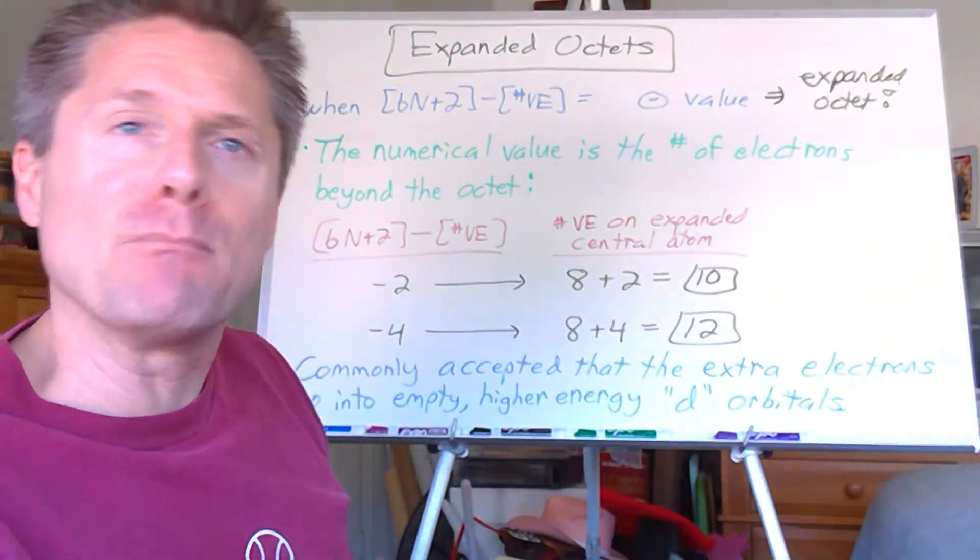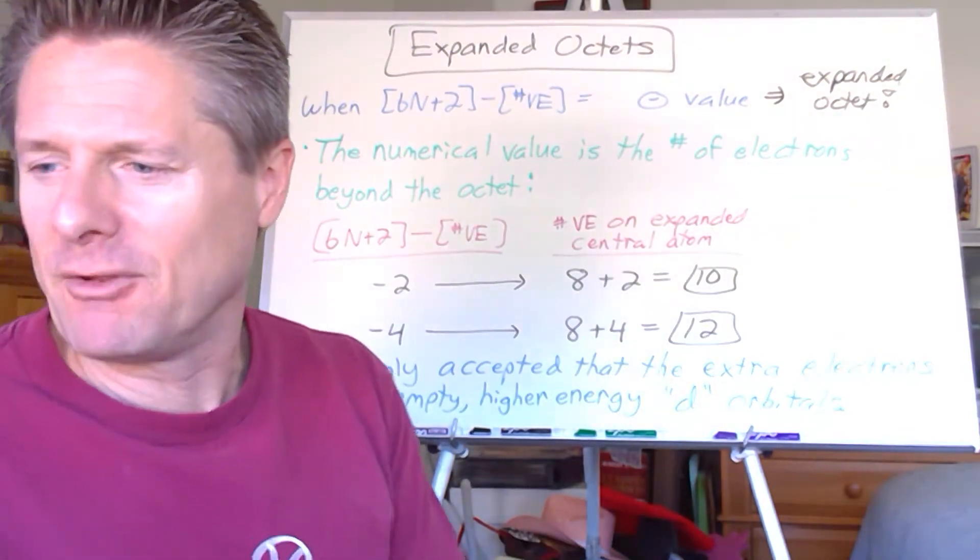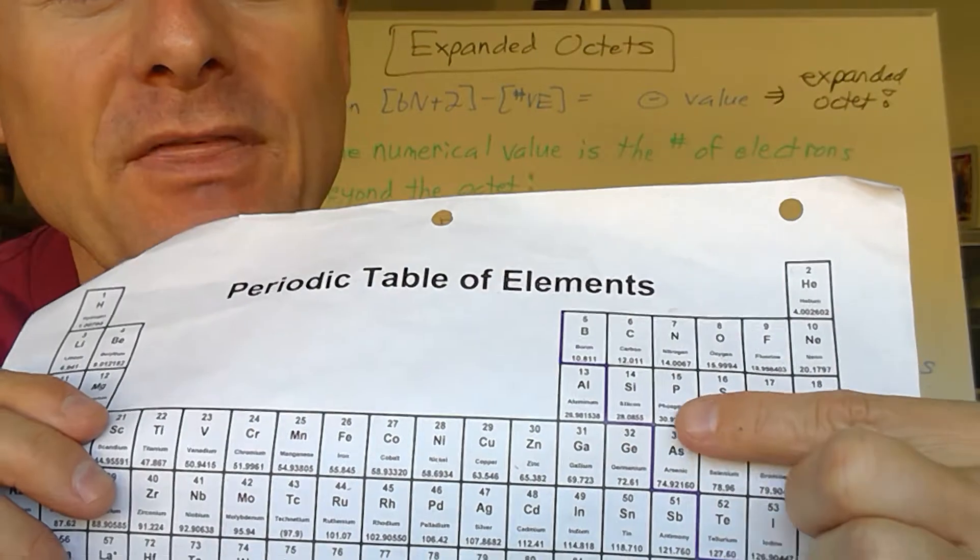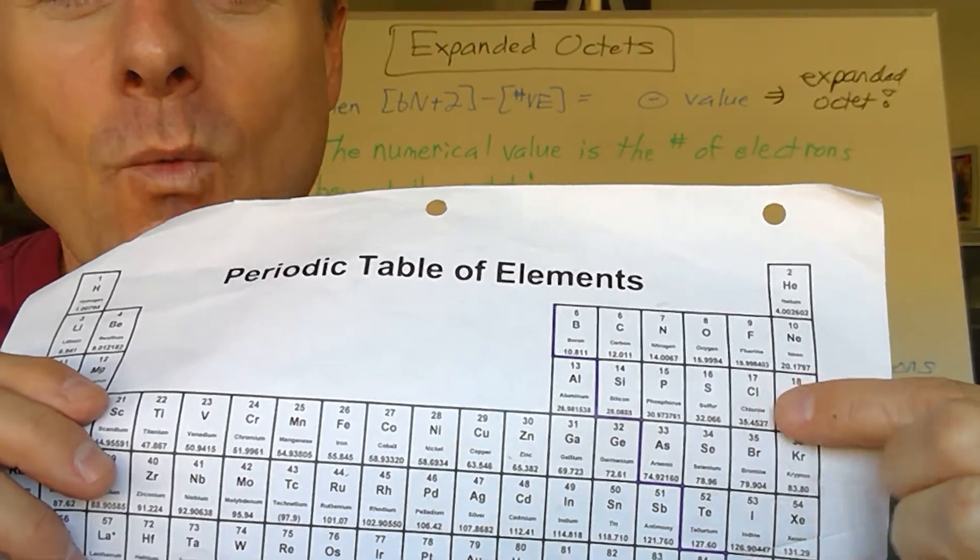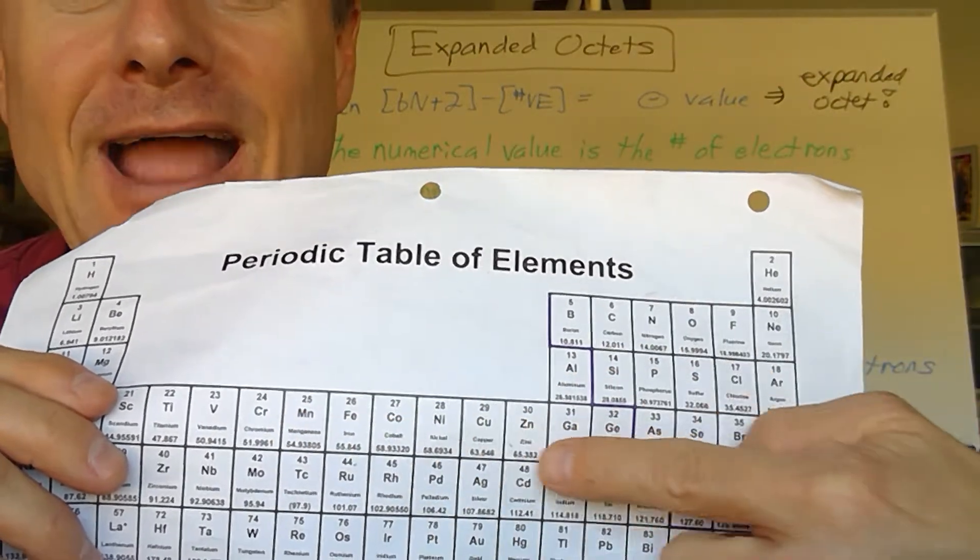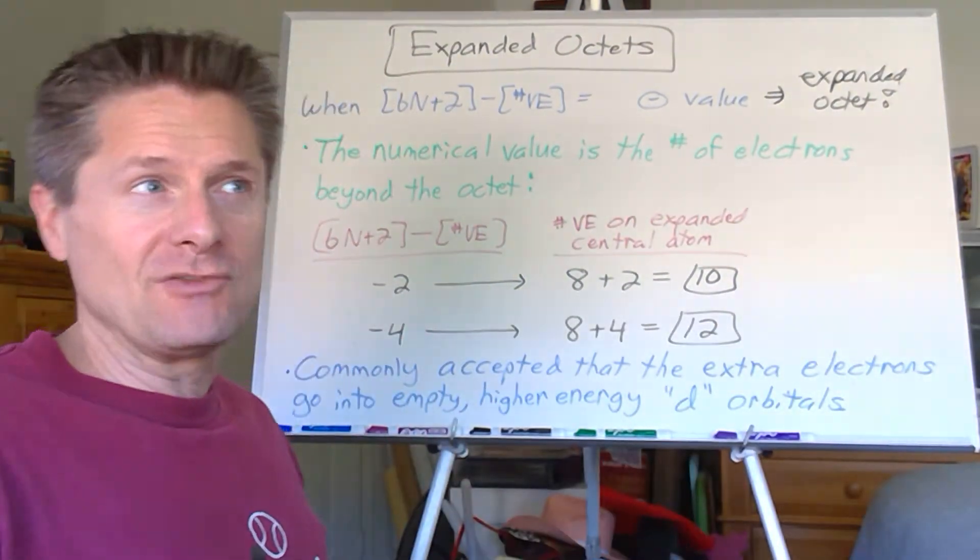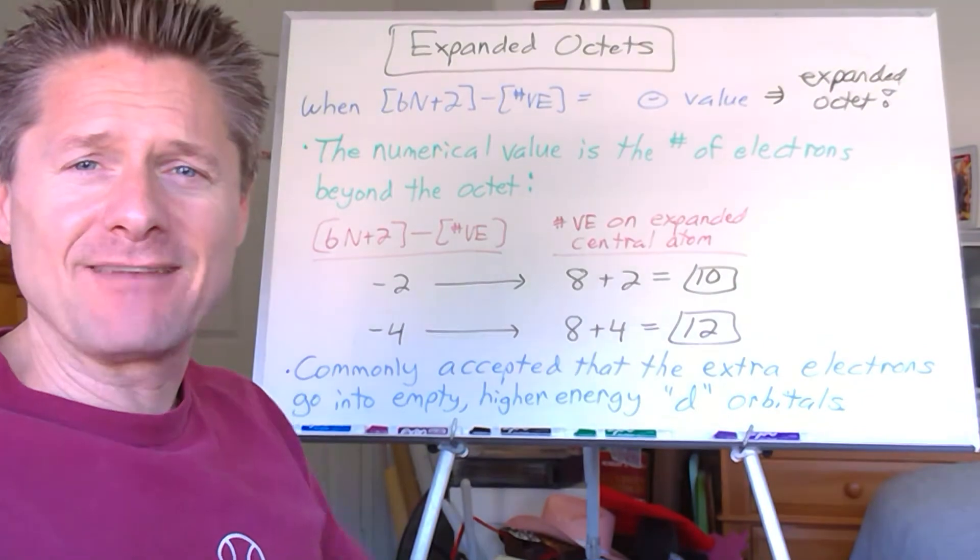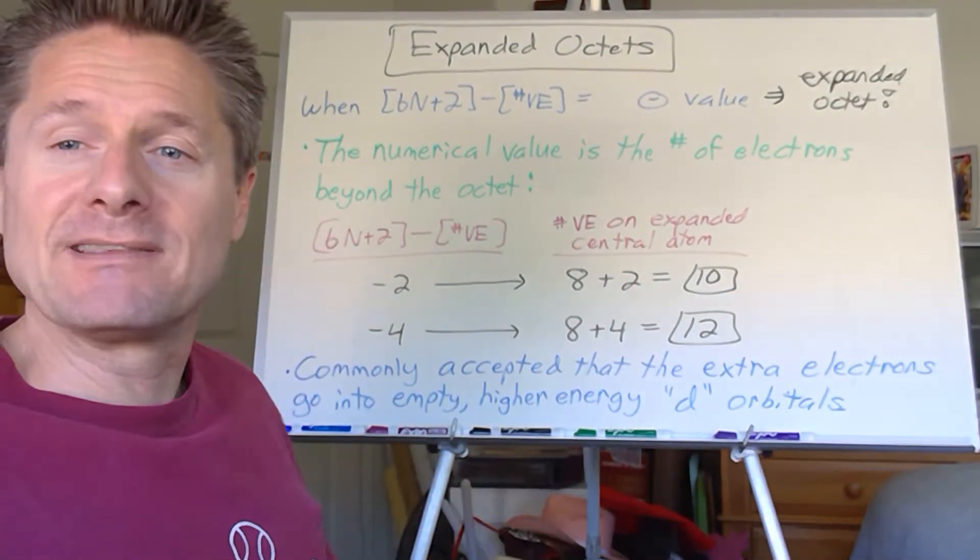Where does the extra 2 or 4 electrons go? There's some debate about that, but most people just say, eh, they go into a higher energy D sublevel. So very commonly, you'll see expanded octets with the phosphorus and sulfur and a lot of the halogens here, where the 3S and 3Ps fill, but they use these empty higher energy 3D orbitals to stick those extra electrons in. Talk about the details of that if you want to take advanced inorganic chemistry or something like that. Rock and roll. Let's do some examples.